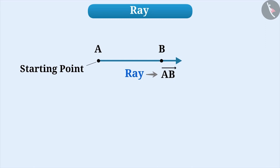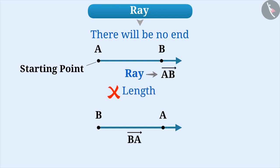For example, if there is a ray named BA, the first letter B shows that the starting point of ray BA is B. Therefore, the ray starts from point B and goes to infinity through A. At the same time, it is important to know that there is no end to the ray. So, the length of the ray cannot be known.